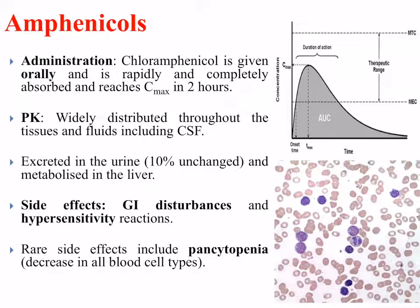In terms of administration, chloramphenicol is given orally and is rapidly and completely absorbed, reaching its maximum plasma concentration within two hours, as shown by the diagram illustrating plasma C-max. It's widely distributed throughout the tissues and fluids, including the cerebrospinal fluid. It's excreted in the urine, with 10% remaining unchanged, and is metabolized in the liver.